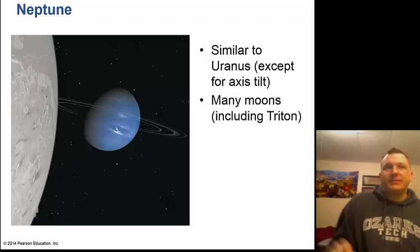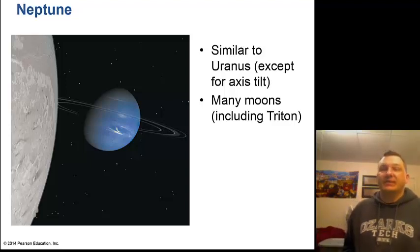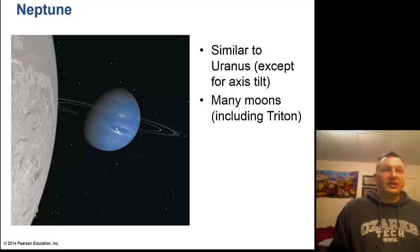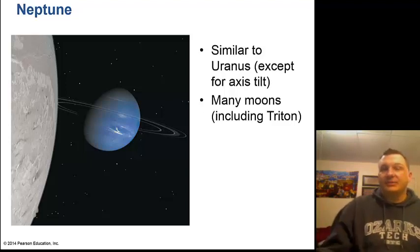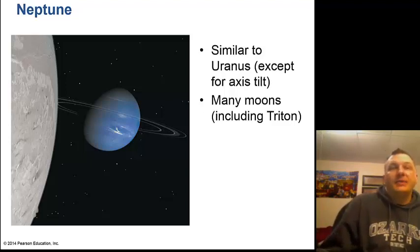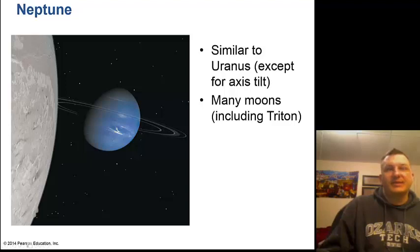Neptune is the farthest planet out, similar to Uranus except for the axis tilt. It has many moons including Triton, the coldest moon in the solar system, which has active geysers of liquid nitrogen. When Voyager 2 flew by in 1989, we discovered that those white wispy clouds are actually the fastest wind speeds in the solar system — 800 miles per hour — which is mind-blowing since Neptune is four billion miles away from its heat source.